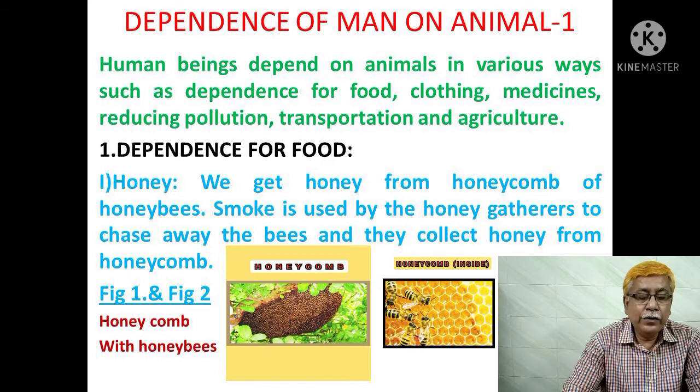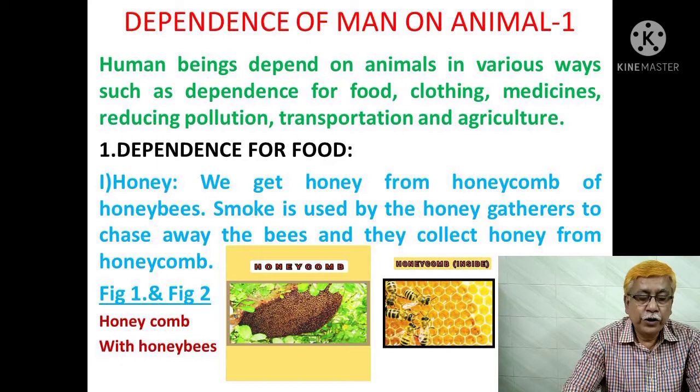One, honey. We get honey from the honeycomb of honeybees. Smoke is used by the honey gatherers to chase away the bees, and they collect honey from the honeycomb. Here you have two pictures, figure 1 and figure 2, showing honeycomb with honeybees.